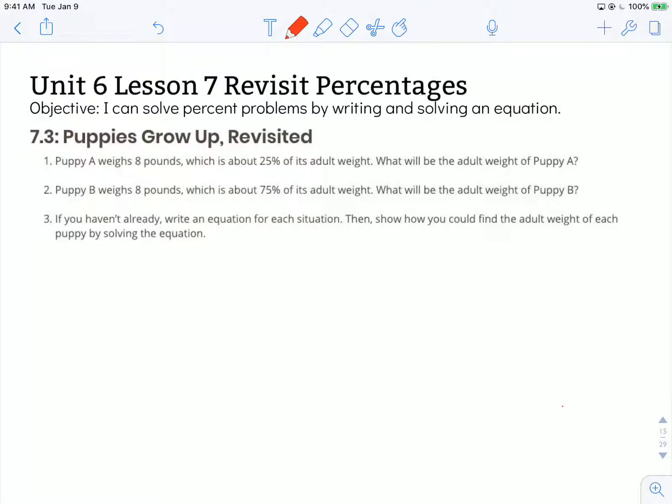Number 1 says, Puppy A weighs 8 pounds, which is about 25% of its adult weight. What will be the adult weight of Puppy A?